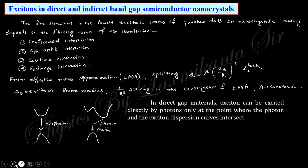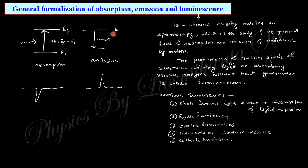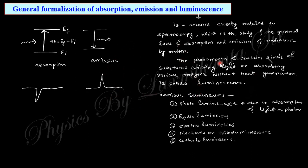Absorption occurs when light incident on a material matches the band gap energy, causing the light to be absorbed and electrons to transition from the valence band to the conduction band. You can see the absorption spectra showing where light is absorbed. For emission spectra, when electrons transition from a higher energy state to a lower energy state, radiation is emitted. The emission spectrum shows a peak at the corresponding energy.